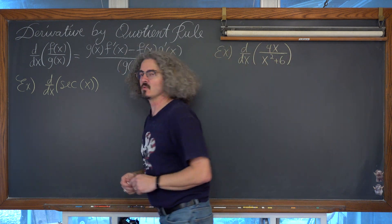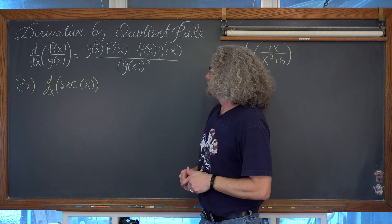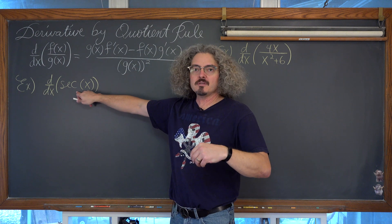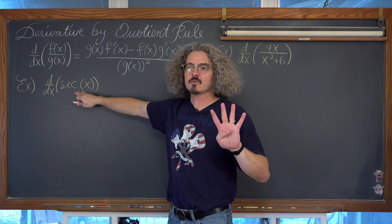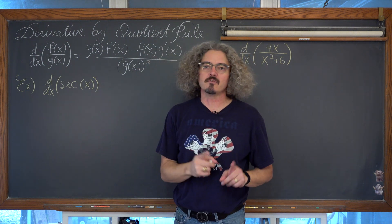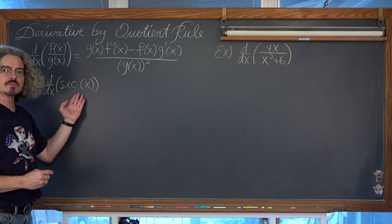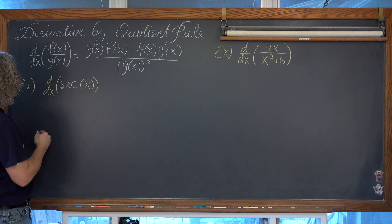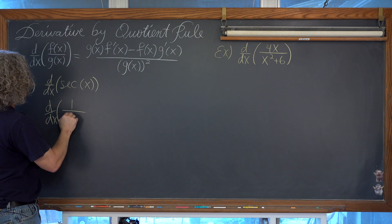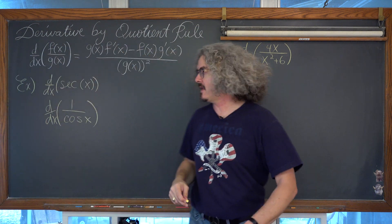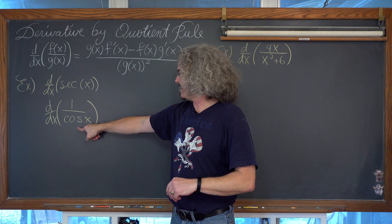Our first example is the derivative with respect to x of secant of x. You might be asking yourself, I don't see a division of two functions. Well, up till now all you may know is the derivative of sine is cosine and the derivative of cosine is negative sine. We don't have any derivative rules for the four remaining basic trig functions. So we are going to derive the derivative of secant right now. We need to write secant in terms of its reciprocal function — something we do know. The derivative of secant of x is going to be rewritten as the derivative of 1 over cosine of x.